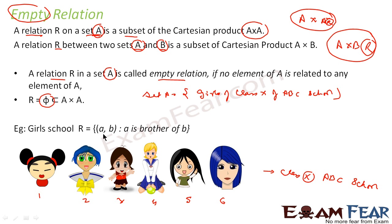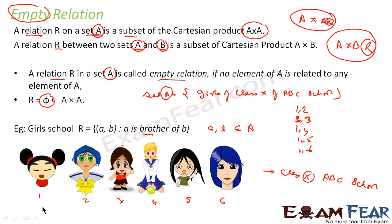Now if I want to define a relation saying A is a brother of B, where A and B both belong to set A — the set of all girls in Class 10 — when I take the Cartesian product of this set, I'll get pairs like (1,2), (1,3), (1,4), (1,5), (1,6), (2,3), (2,4), and so on, plus the reverse pairs as well.